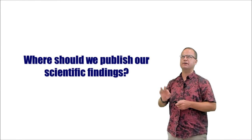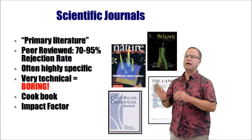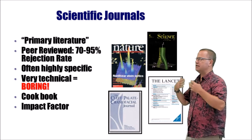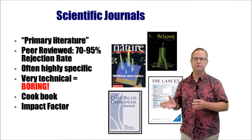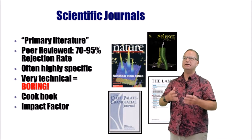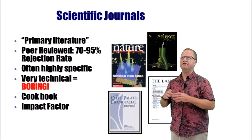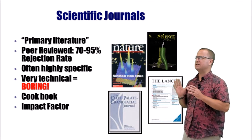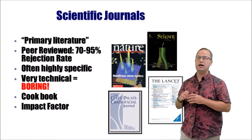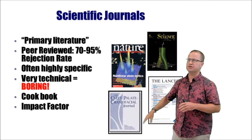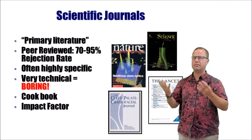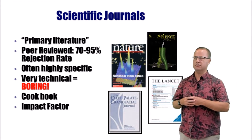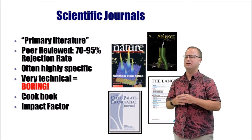Scientific literature is a bit different from everyday popular literature. We call it primary literature because that's where primary findings are first announced and published. These appear in what we call journals, and most are peer-reviewed, meaning other scientists scrutinize, make corrections, and may even reject the article. Some top journals have rejection rates of over 70 to 95 percent. Journals can be very general, like Nature or Science, or very specific — like the Journal of Cleft Palate Research, which focuses only on craniofacial disorders.